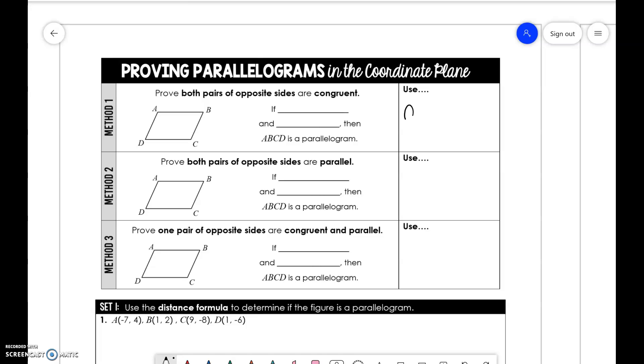The first one is by using the distance formula. When we do that, we need to prove that AB is congruent to DC and AD is congruent to BC. That's one of the qualifications of being a parallelogram where the opposite sides are congruent.